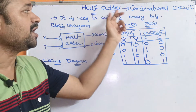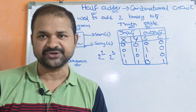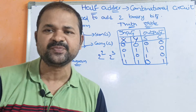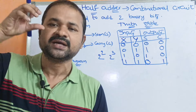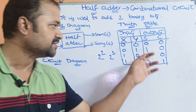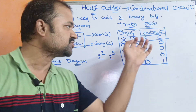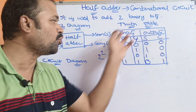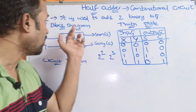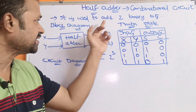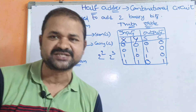The half adder can be called a combinational circuit. A combinational circuit means the output depends only on the present inputs. So here, the outputs — sum and carry — depend only on the present inputs x and y. The purpose of the half adder is to add two binary bits.